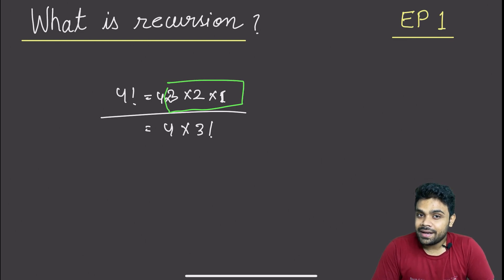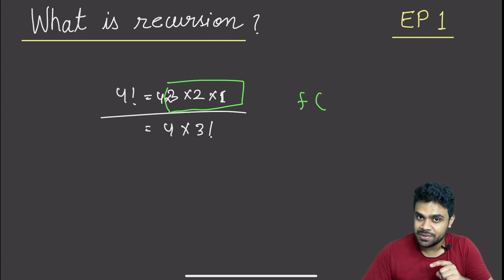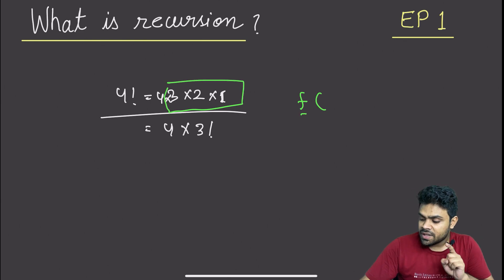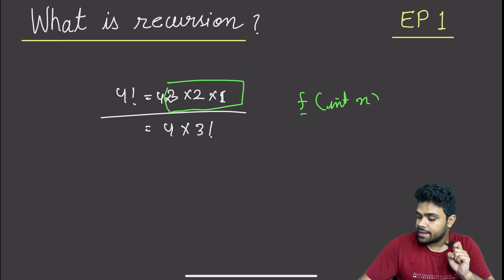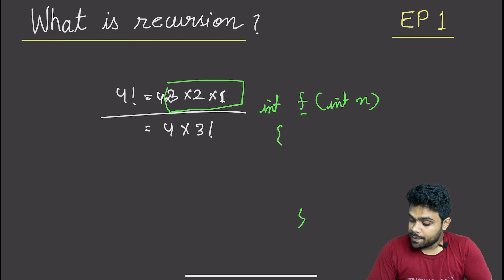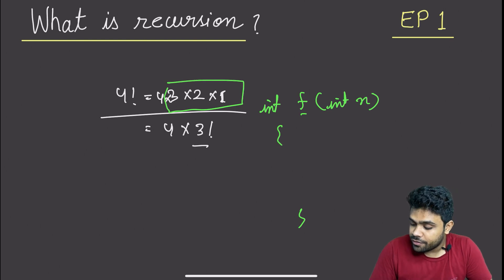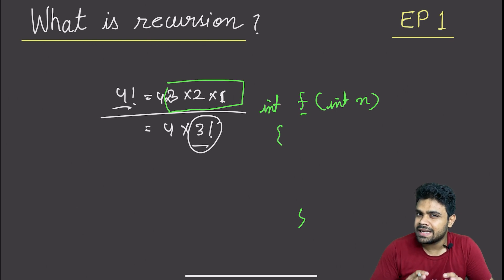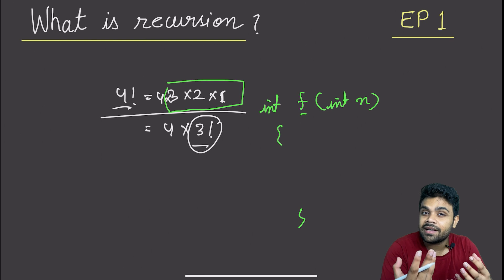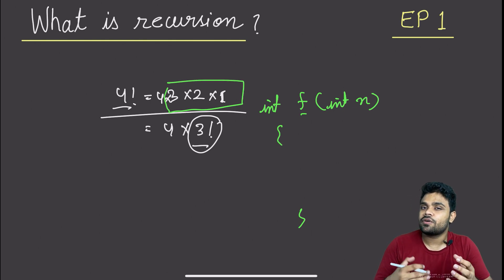So let us try to write a function to find n factorial, where n can be any number. Let us name the function as f for simplicity — never use this kind of naming in real programming interviews. The function's name is f, it takes input n and returns an integer which will be n factorial. If I need to find n factorial, I can get help from n minus 1 factorial. Somehow if I know 3 factorial, I can easily find 4 factorial. If I know 99 factorial, I can easily find 100 factorial. So if you know the answer for n minus 1 factorial, you will know the answer for n factorial as well.